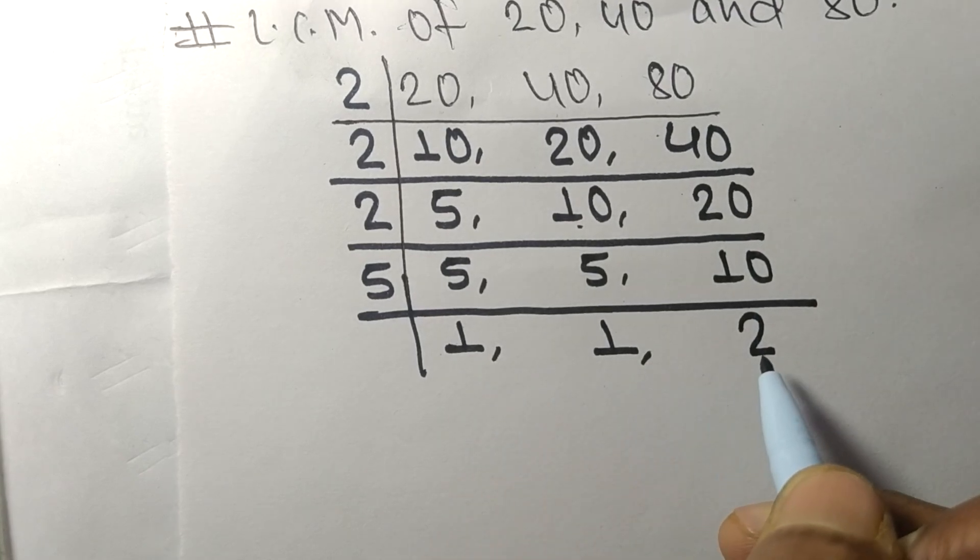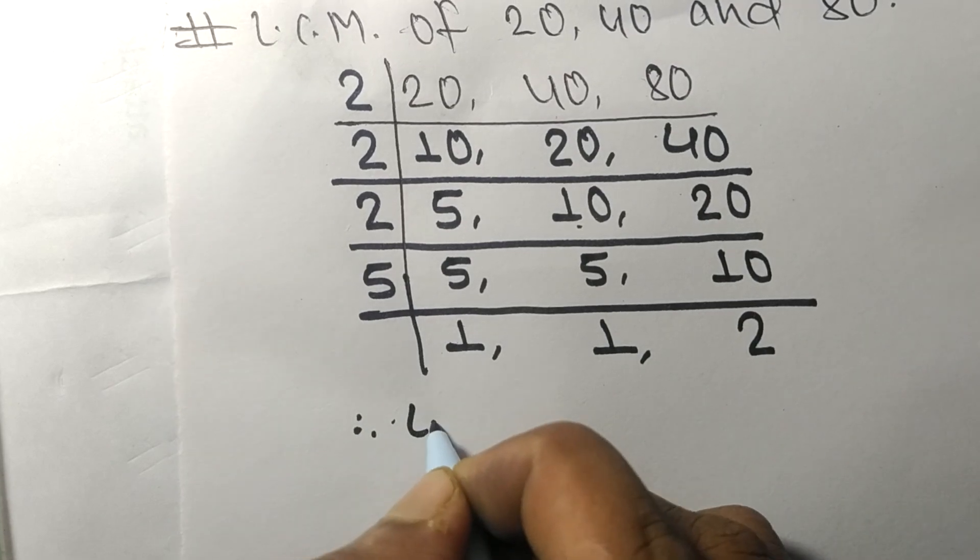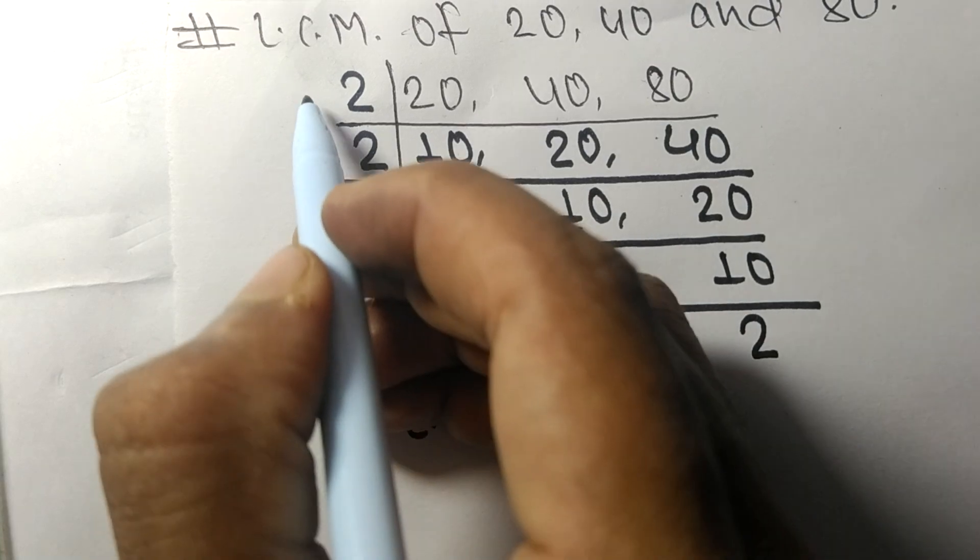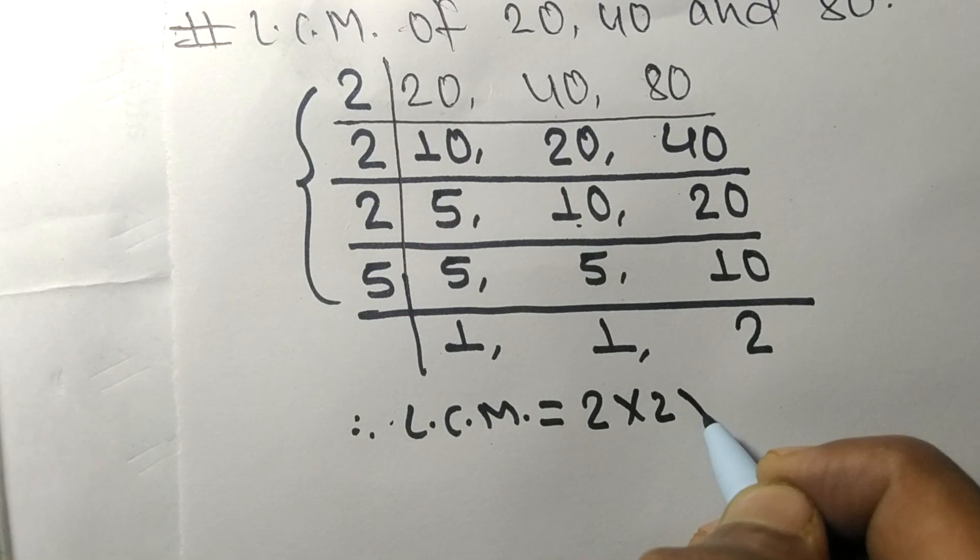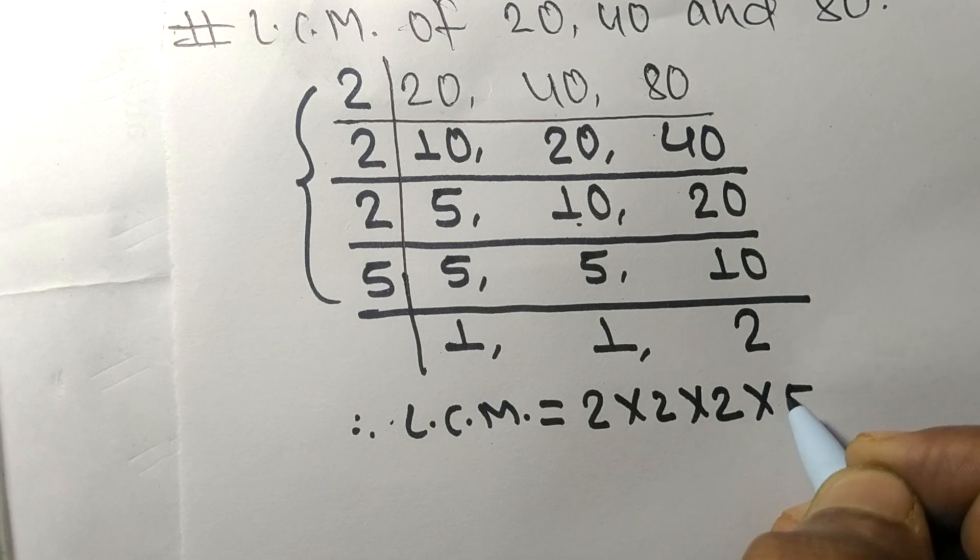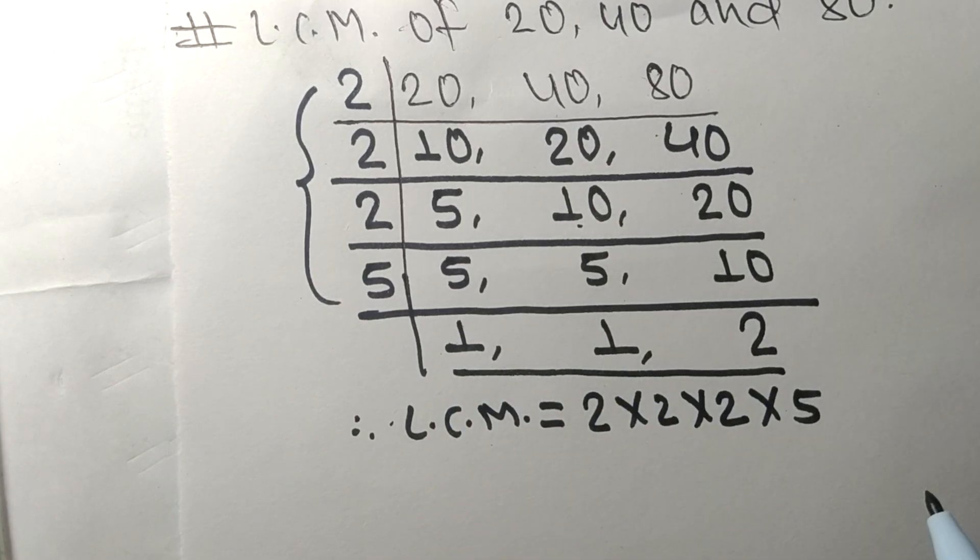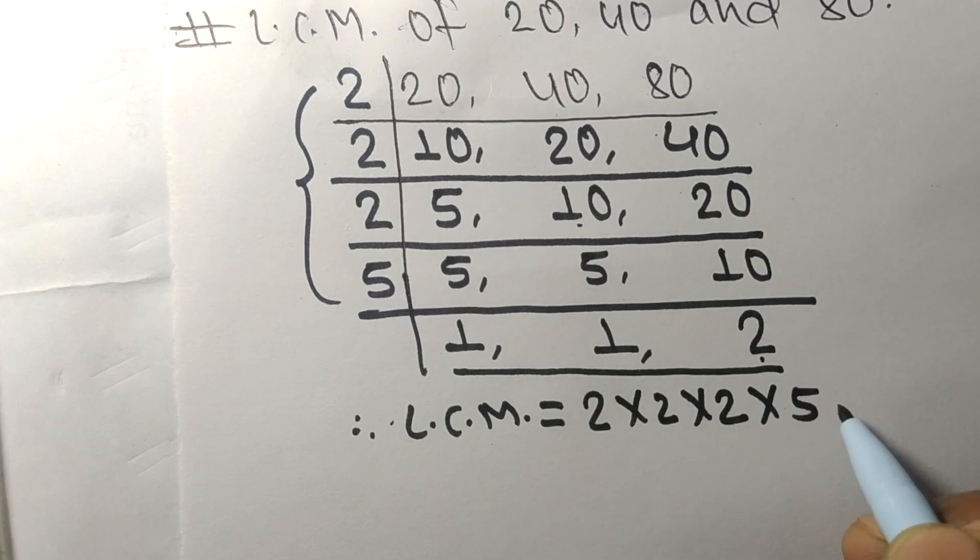Now these numbers are not divisible by the same number. Therefore its LCM is equal to, from this side it is 2 times 2 times 2 times 5, and from this side we choose the numbers greater than 1, that is 2. So multiplied by 2.